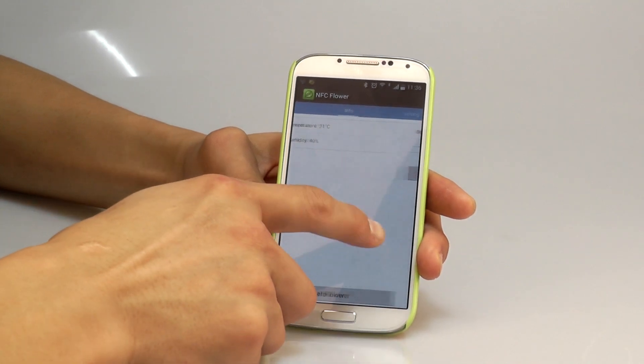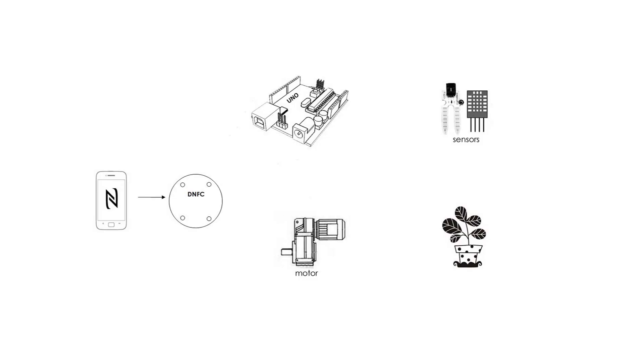When we touch, the data will be written in the tag and passed into the Arduino, which gives the instruction on the motor. Meanwhile, the sensors will feed back to the phone.